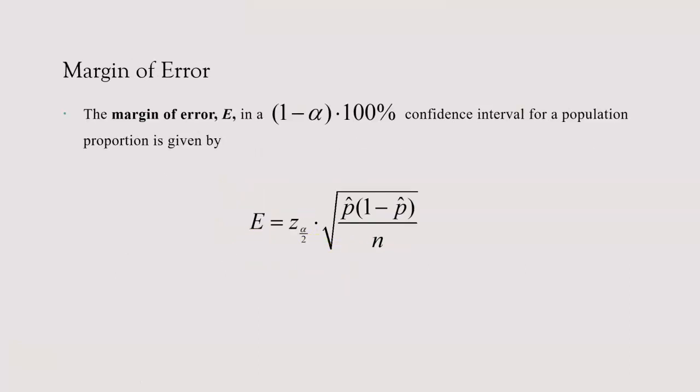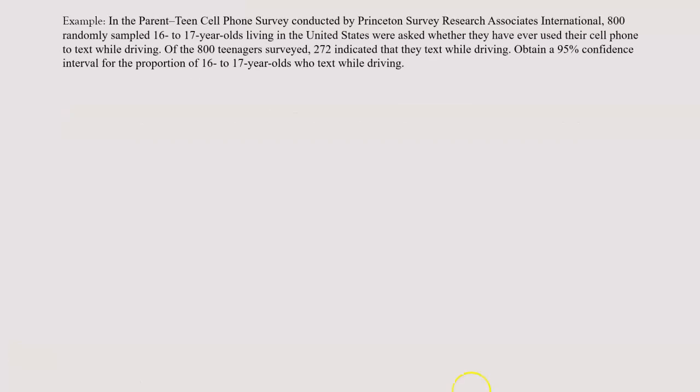Now let's look at an example. In the parent-teen cell phone survey conducted by Princeton Survey Research Associates International, 800 randomly sampled 16 to 17 year olds living in the U.S. were asked whether they have ever used their cell phone to text while driving. Of the 800 teenagers surveyed, 272 indicated that they text while driving. Obtain a 95% confidence interval for the proportion of 16 to 17 year olds who text while driving.